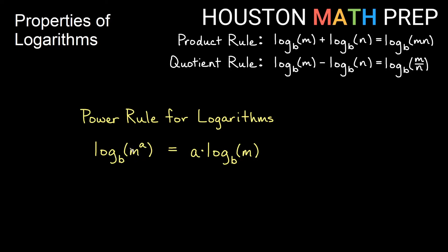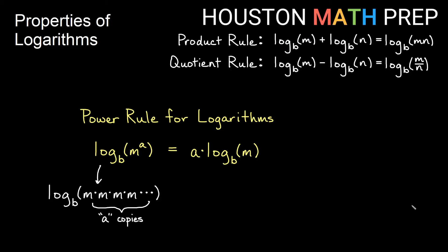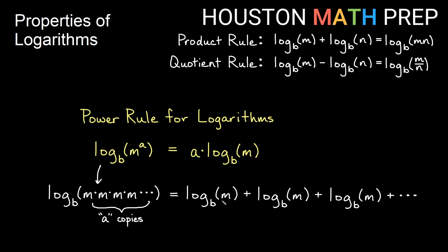Here's why: log base b of m to the a means m is multiplied a times — a copies of m inside the log. Using the product rule, that multiplication inside the log breaks up into a addition, giving us a copies of log base b of m added together. Counting those copies, we get a times log base b of m. So the shortcut: if you have a power inside the log, bring it out front as a coefficient, and you no longer have an exponent in your log.